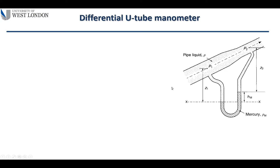In a pipeline, the upstream is where the flow is coming from and the downstream is further along. The purpose of the differential U-tube manometer is to calculate the difference in pressure, P1 minus P2.